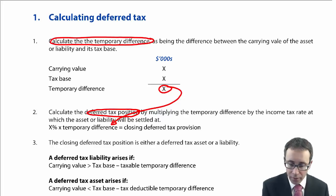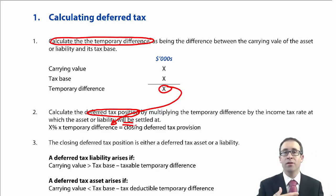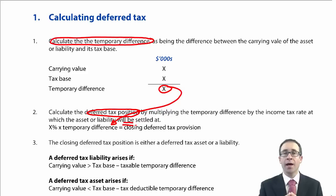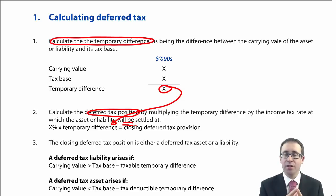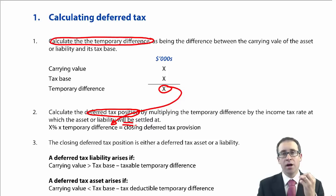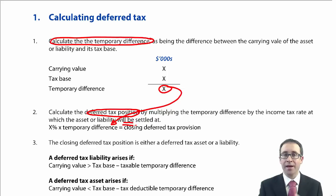Be careful — that tax rate is what the tax liability or tax asset will be settled at in the future, providing the rules have been passed at our reporting date. So if we're going to settle the liability next year, we apply next year's tax rate, assuming it has been passed as tax law. If not, we use the current rate of tax.